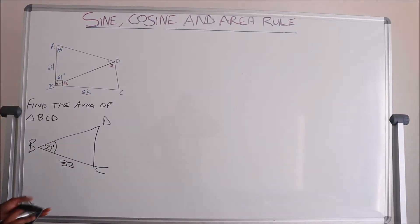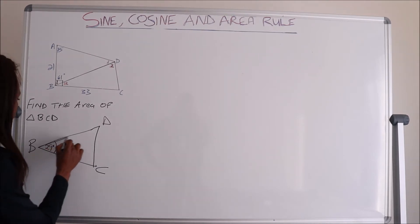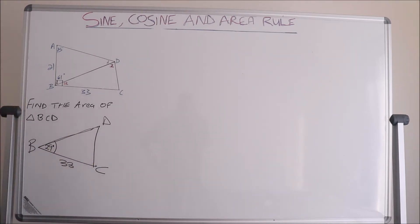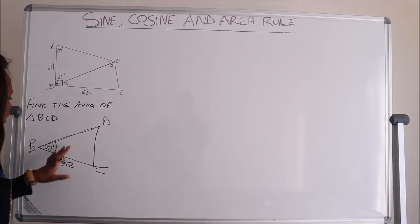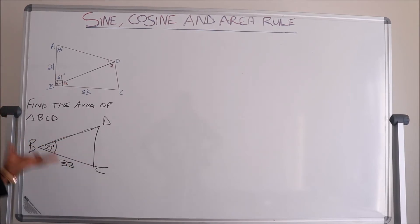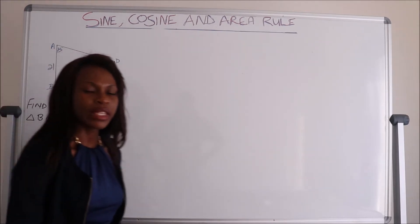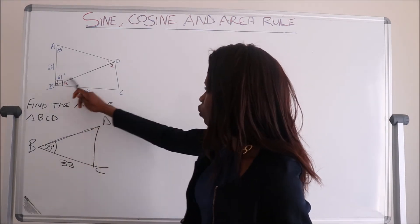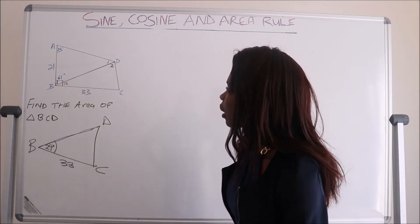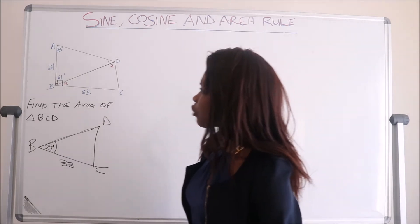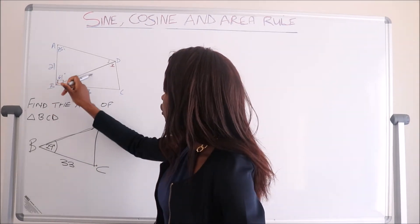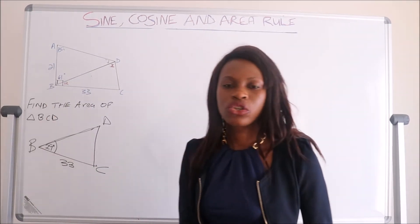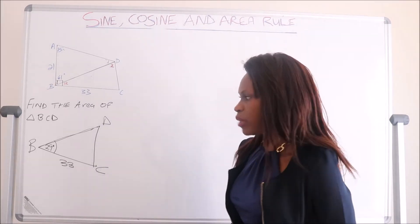Now that we have 29 degrees, we need to find the other side of the triangle, which is BD. Once we have BD, we'll be able to find the area. To find the length of BD using the first triangle, we need to use the sine rule, where BD is opposite to one angle and the known side is opposite to another.